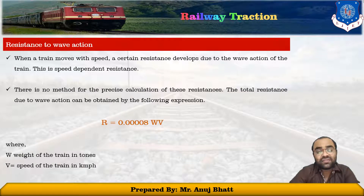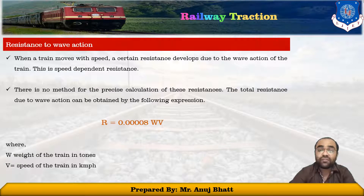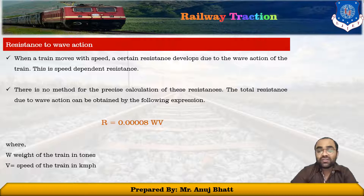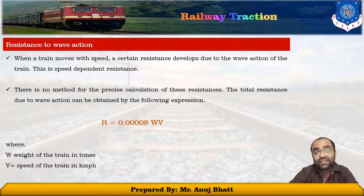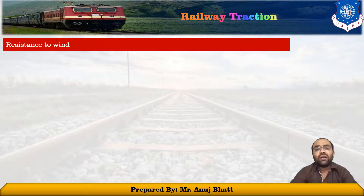When a train moves with speed, a certain resistance develops due to the wave action of the train. This speed-dependent resistance is because of irregularities and vehicle movement of the wheels on the rails. Sometimes on a railway track the locomotive moves in a zigzag manner, which also leads to this kind of resistance. There is no method for precise calculation. Total resistance due to wave action is obtained by r = 0.0008w·v, where the coefficient is nearly negligible. w is the weight of the train and v is the speed of the train.